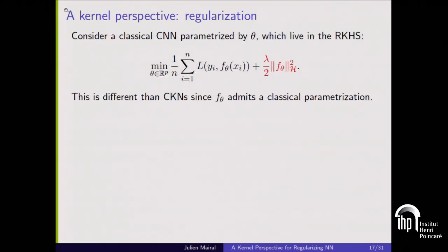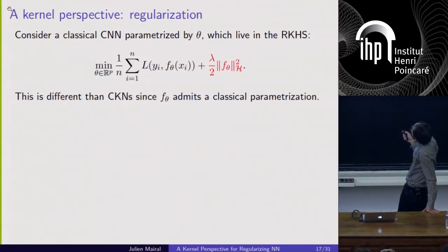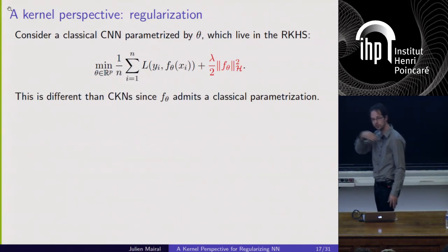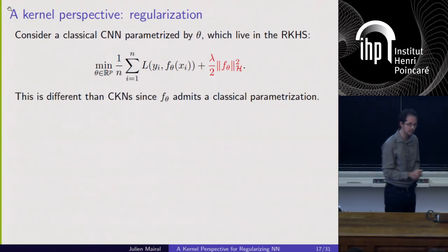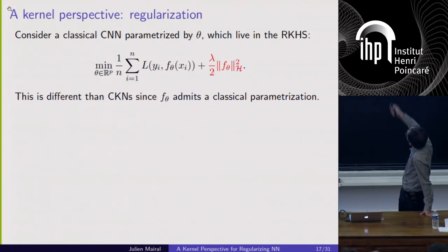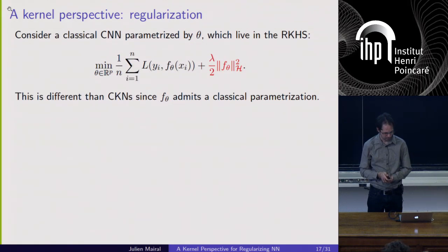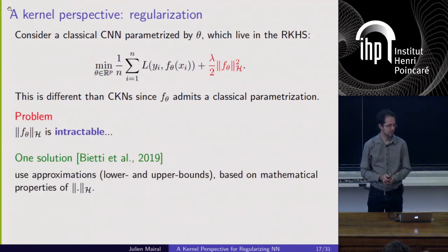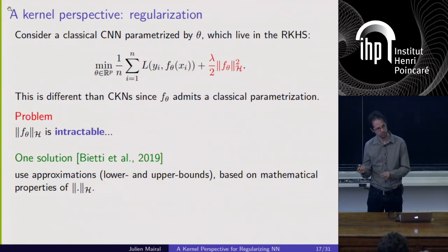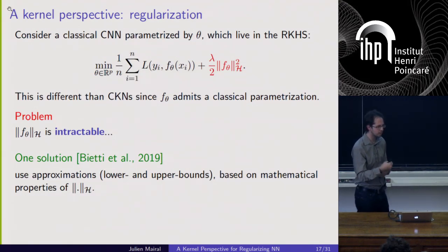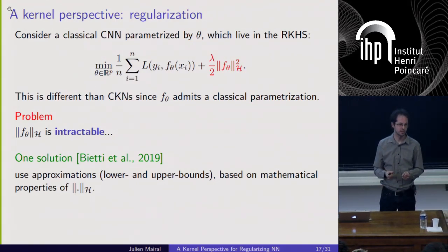I consider a classical convnet f theta with parameters theta representing the filters, and want to regularize with the norm of f theta. The norm is still intractable for this f theta, so one solution is to use approximations — either tractable upper bounds or tractable lower bounds of this quantity, or a combination of both. What worked best was always a combination of upper bounds and lower bounds for these norms.